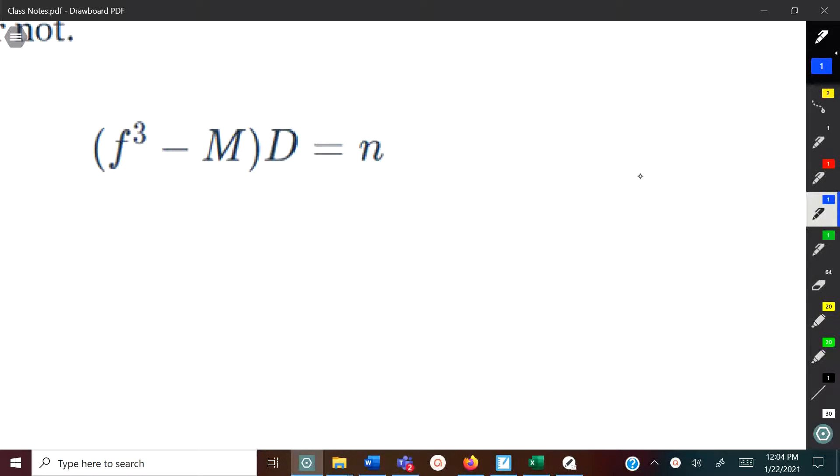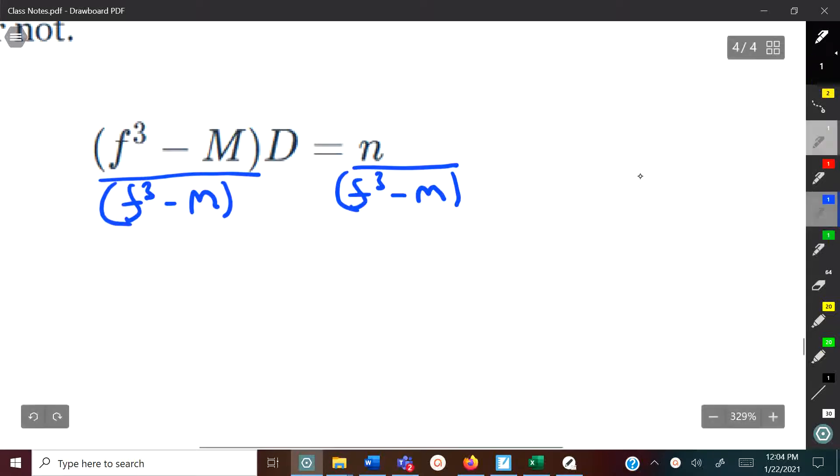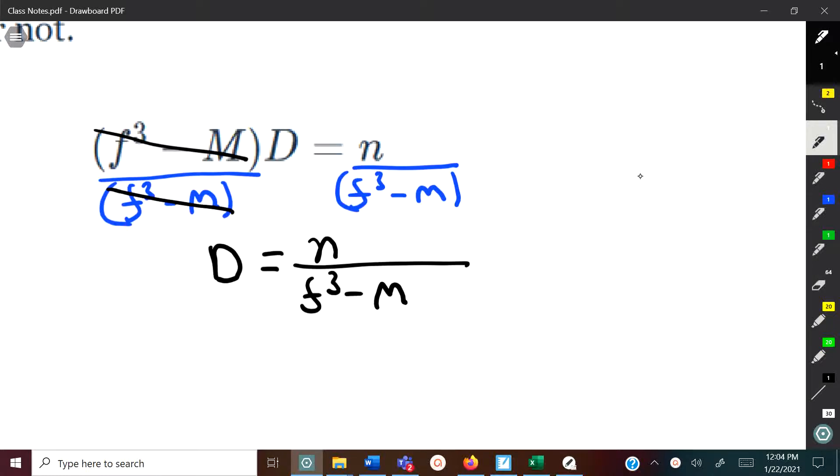So we're going to divide by f cube minus m and do that on both sides. It doesn't hurt to put it in parentheses. This term cancels out, leaving just d, and d equals n divided by f cube minus m—that's a capital M. Remember to type it in parentheses.